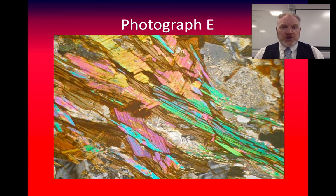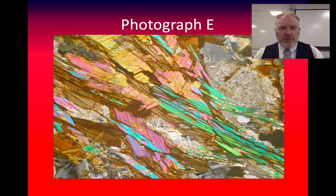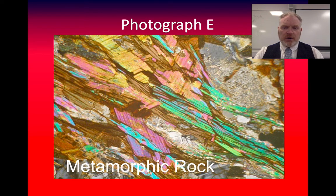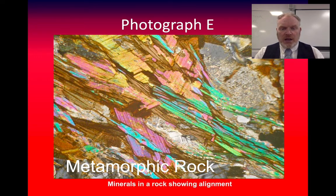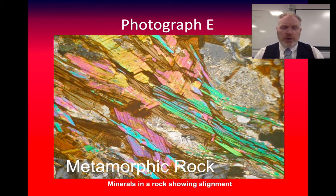Photograph E is a picture taken down a geological microscope, so we can actually see the internal structure of the rock — you're looking at an image that's maybe only a few millimeters across, but we can still see the key feature. This particular image shows a metamorphic rock. The reason we can tell is that we can see alignment of the minerals within this rock — there are crystals aligned going from the top left down to the bottom right. This particular type of metamorphic rock is one we call a schist.